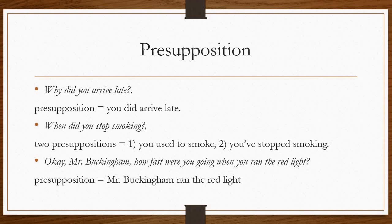Another example: 'How fast were you going when you ran the red light?' — perhaps a question asked in court to a person charged with breaking a signal. The presupposition is that the person ran the red light. Now, if the person answers 'I was going at 80 or 90 kilometers per hour,' it means they have accepted the presupposition as true and are thereby accepting the charge of breaking the signal.